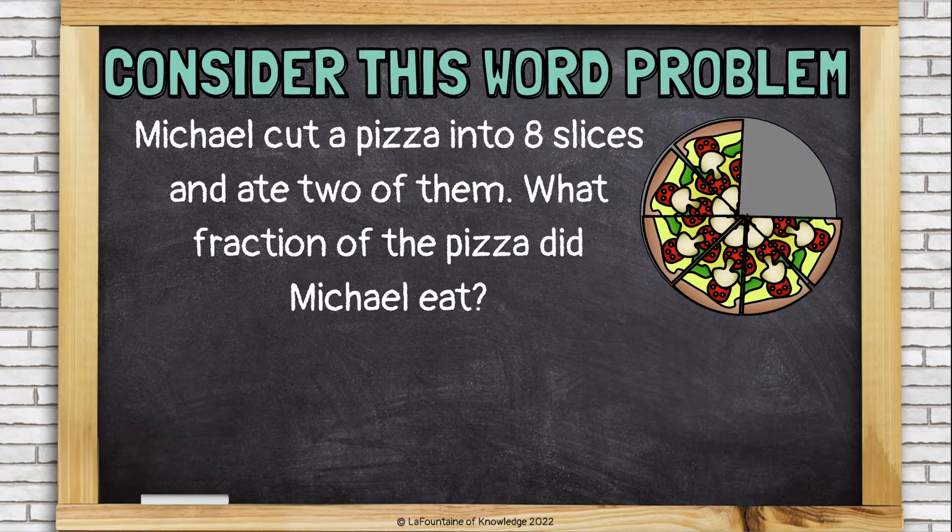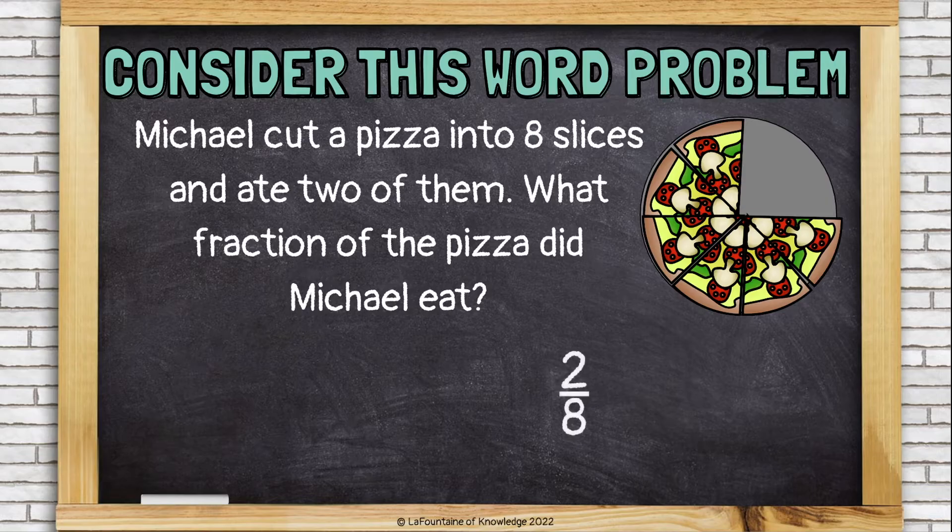Well, I see that the pizza was cut into eight slices and that two are missing, so Michael ate two out of eight, or two-eighths of the pizza.